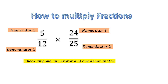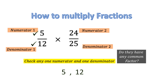Now what we have to do is check any one numerator and one denominator. So let us take 5 and 12. What to check? Do they have any common factor? Do 5 and 12 have any number in common that is a factor for both? No, there is no such number other than 1, and 1 we will not consider.